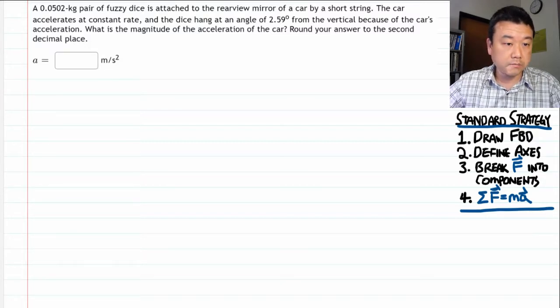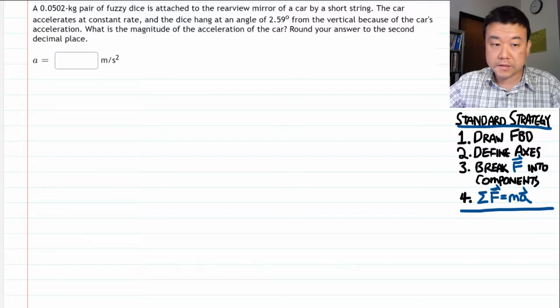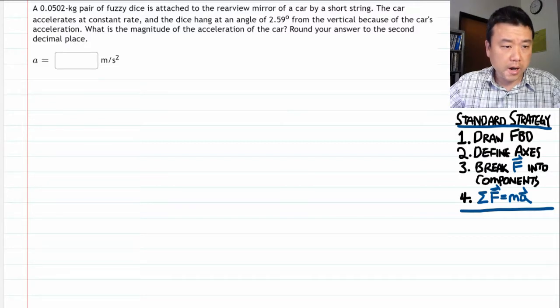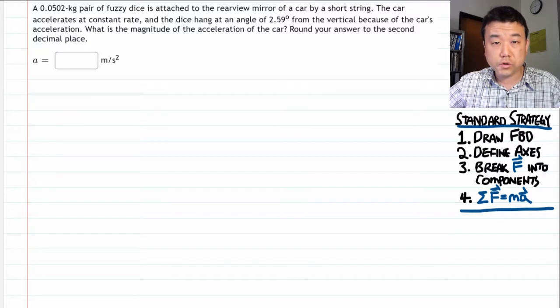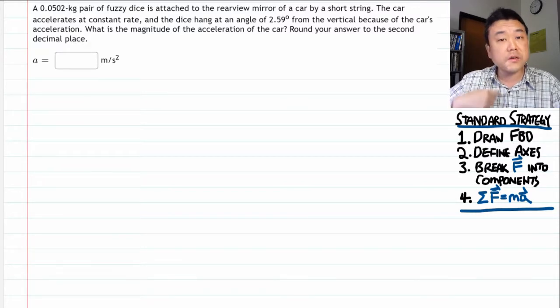It says a mass of fuzzy dice is attached to rear view mirror by a short string. The car accelerates at a constant rate, and the dice hangs at some small angle from the vertical because of the car's acceleration. What is the magnitude of the acceleration of the car? All right, looks like I should draw a diagram once again to help me think through this question.